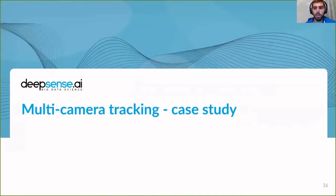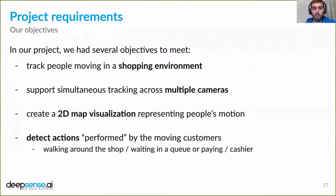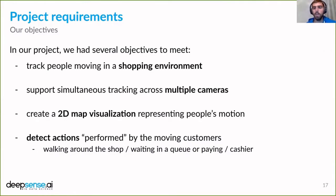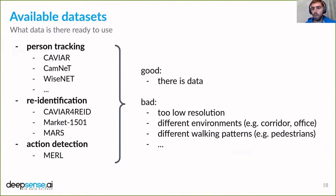Let's move to our particular case study. We wanted to track people moving in a shopping environment. We also wanted to support simultaneous tracking across several cameras mounted in the same shop — if a person moves from one camera to another, they should still be tracked. Another goal was creating a 2D map visualization representing people's motion not just with bounding boxes but with markers on a bird's-eye-view map of the shop. Finally, we wanted to detect actions performed by customers: walking around the shop, waiting in a queue or paying, and being a cashier.